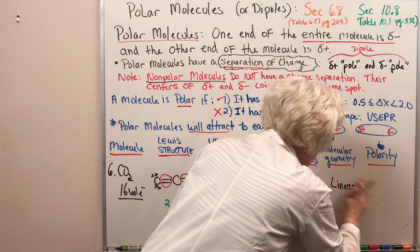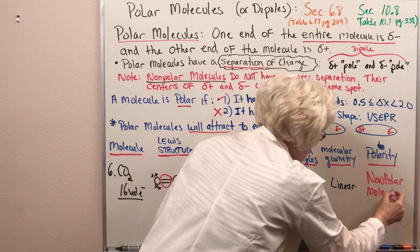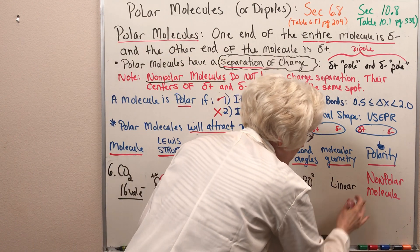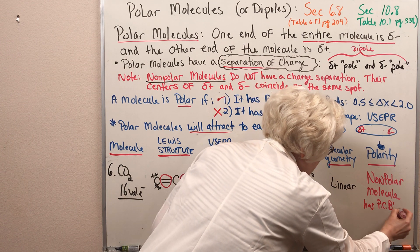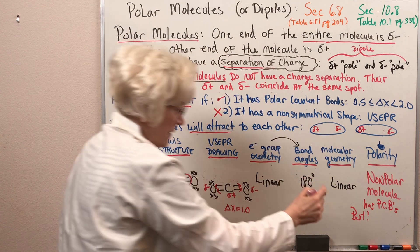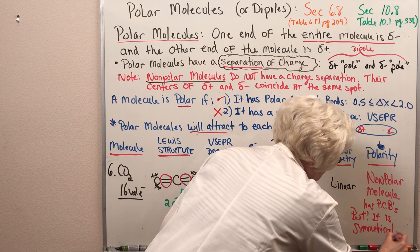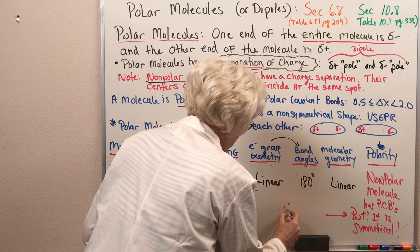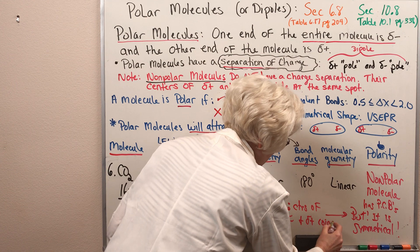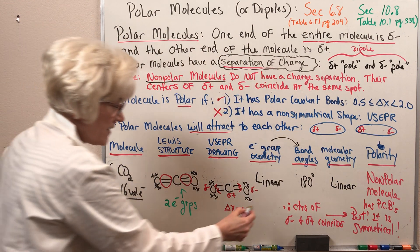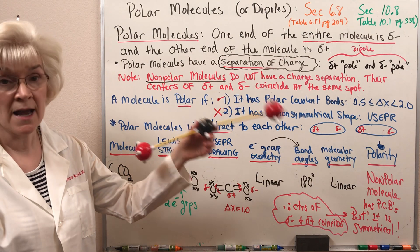Carbon dioxide is a nonpolar molecule. Why? Because even though it has polar covalent bonds, it is symmetrical. Therefore, the centers of partial negative and partial positive charge coincide — they are at the same spot and are not separated from each other. Carbon dioxide is a nonpolar molecule.